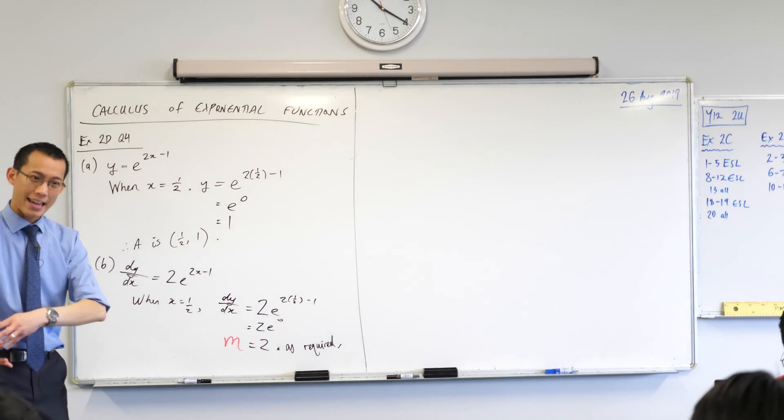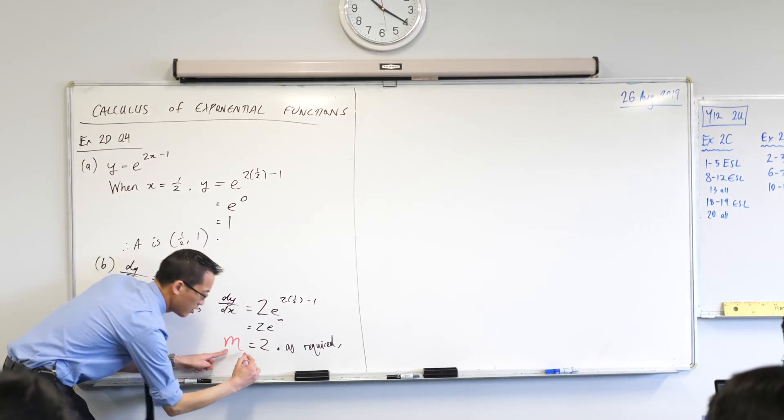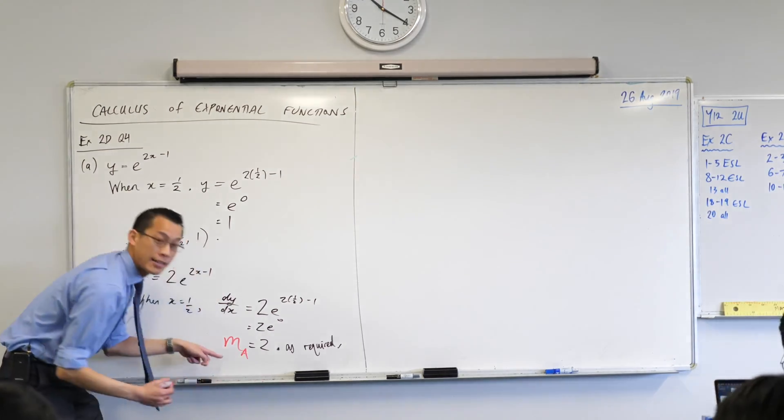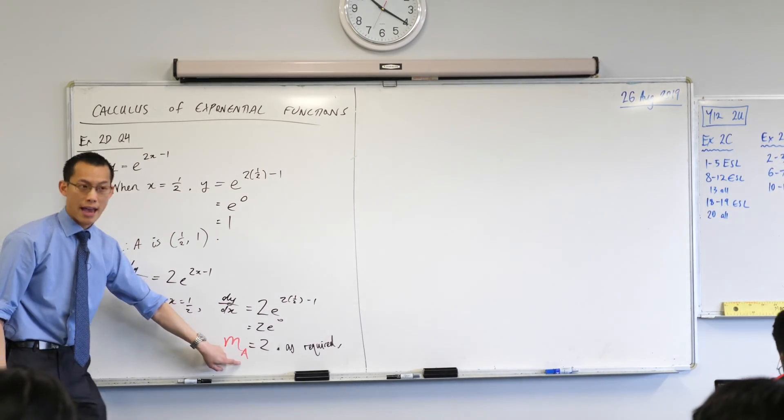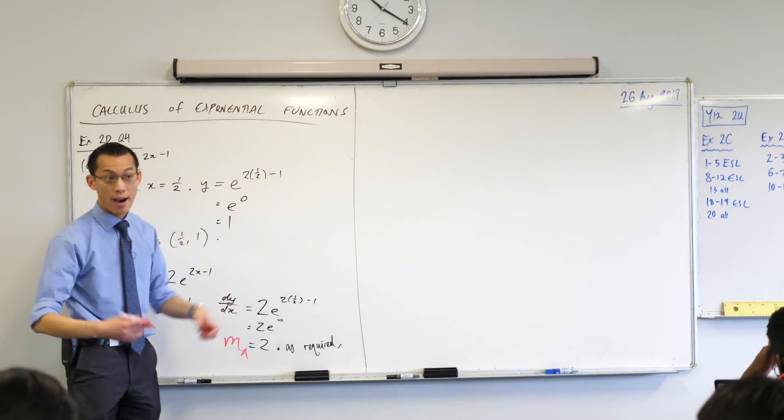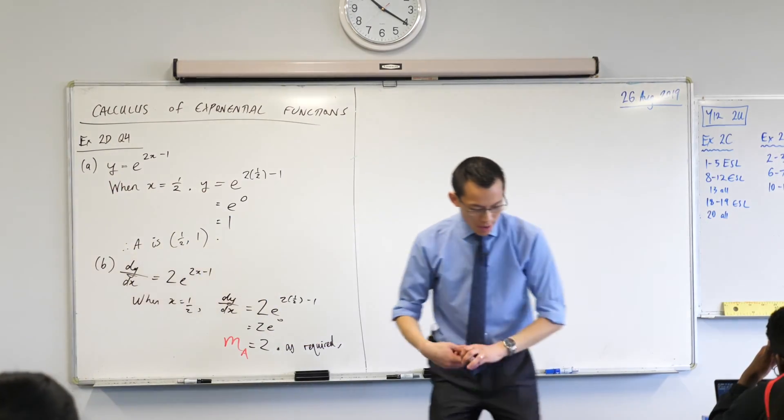So I'm going to say M, this is a gradient, a specific place, at A. So I'm going to say M, and I usually use a little subscript, little A down the bottom there. So this is a way of saying the gradient at that point A is 2, because that's how I calculate it.